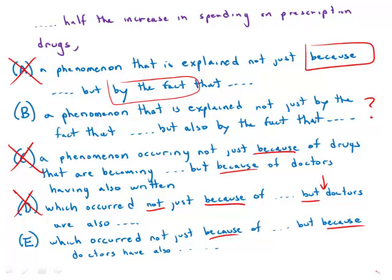Having eliminated everything else, we have to settle for B. B is far from ideal — it is very wordy — but it does correctly capture the parallel structure. As they say, in the valley of the blind the one-eyed man is king. B, although not very attractive, is the strongest of the five answer choices.